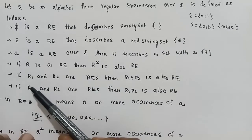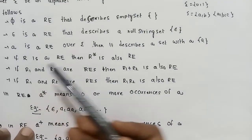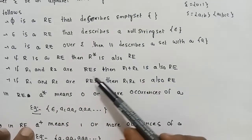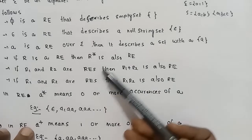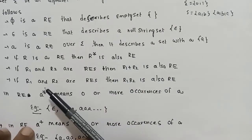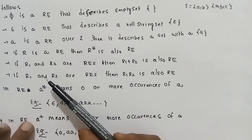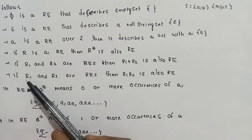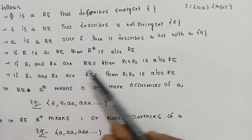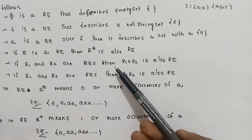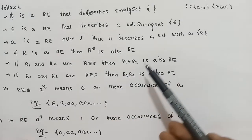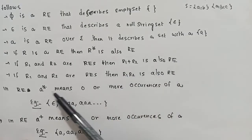R* is the Kleene closure of R and is a regular expression. Next, if R1 and R2 are two regular expressions, then their union R1 plus R2 is also a regular expression.